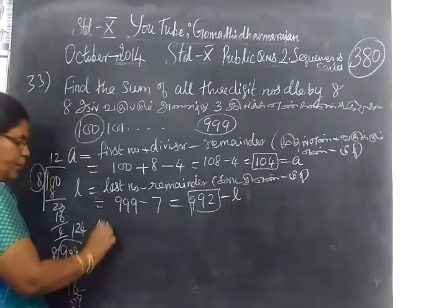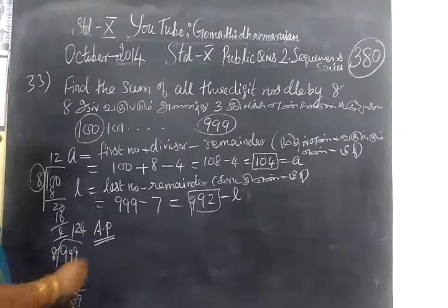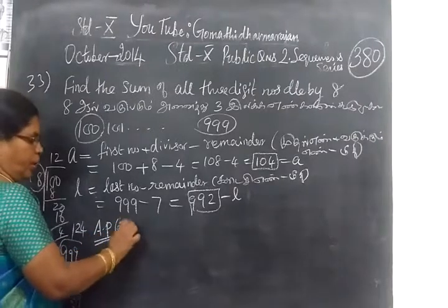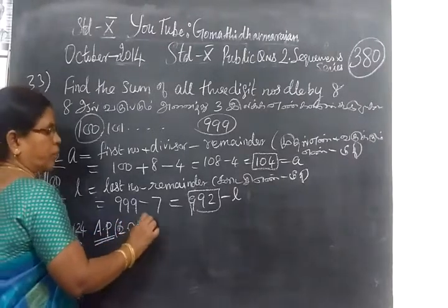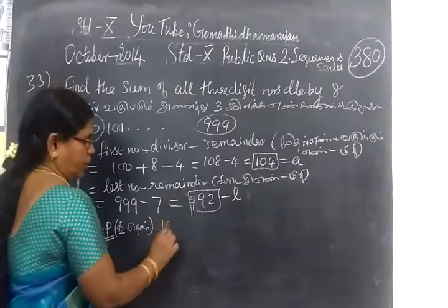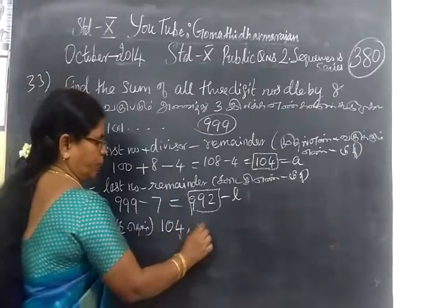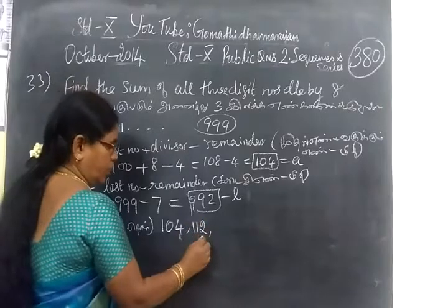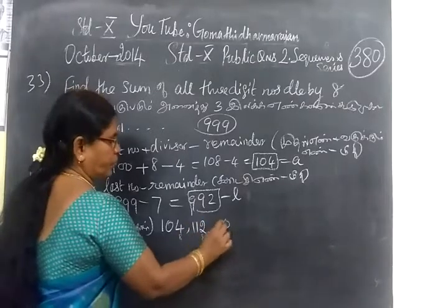So this is A, this is L. Now you have to find n, the number of terms. The formula is n equal to L minus A by D plus 1. Every term adds 8. The common difference is 8.